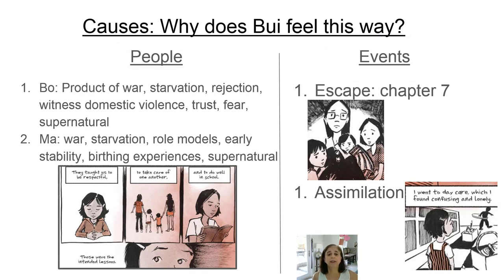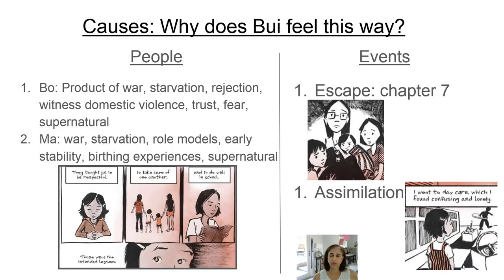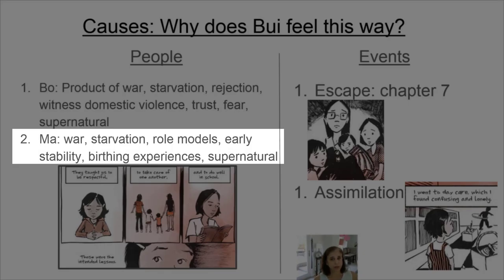Two of the key people are Bo, her father, and Ma. Bo is a product of the Vietnam War. He's experienced starvation, been through rejection from his family, and witnessed domestic violence. He clearly has issues with trust and fear, and has turned to the supernatural to find answers to questions where there's no logical reasoning.